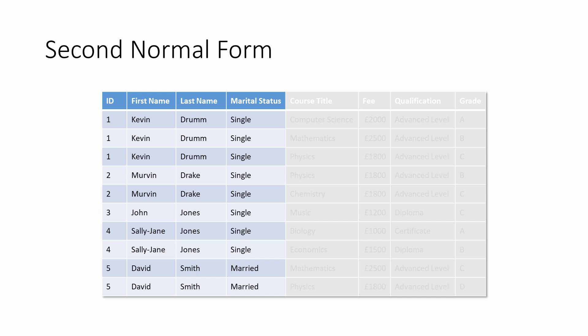When you have to change one thing because you've changed another, this is known as a functional dependency. The first name, last name and marital status are functionally dependent on the ID, and it's the only thing that they are functionally dependent on.